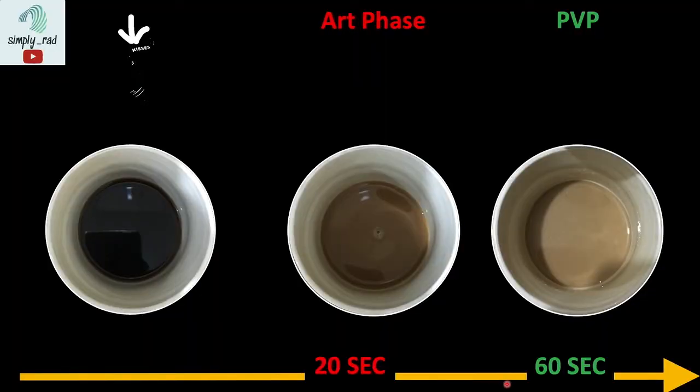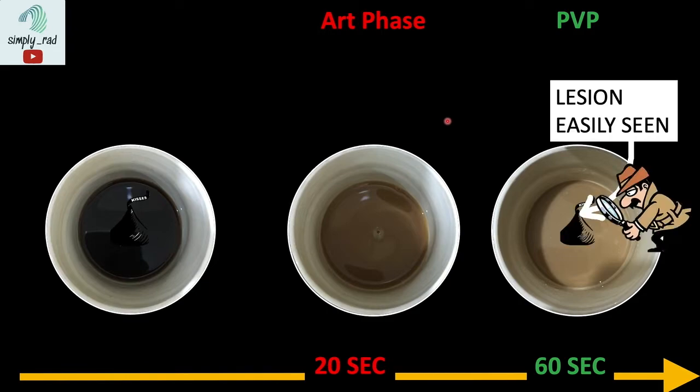Now, if we drop a dark chocolate into the black coffee, it will be very difficult to spot. If we were to pick just one phase between the arterial phase and the portal venous phase, which phase gives us the higher chance of finding the chocolate? Since the chocolate is dark, our best bet would be to look for it in the portal venous phase, because this is when the liver background is at its brightest.